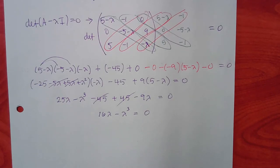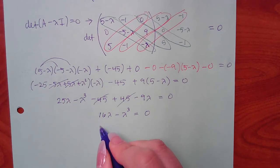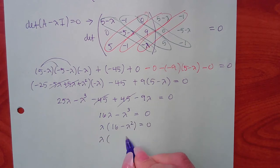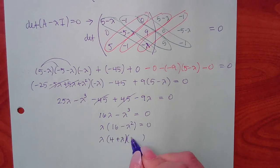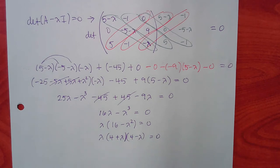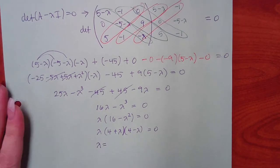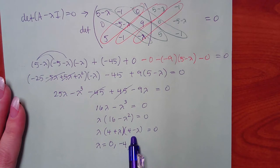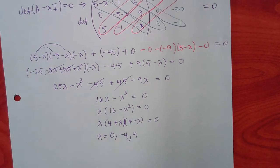Combining like terms gives 16 lambda minus lambda cubed. Factor out negative lambda: negative lambda times (lambda squared minus 16). That's a difference of squares, so factor further: negative lambda times (lambda plus 4)(lambda minus 4). Three lambdas: 0, negative 4, and positive 4.